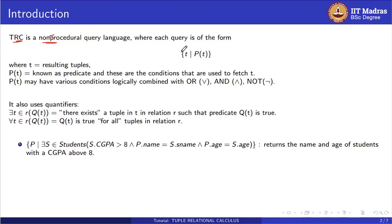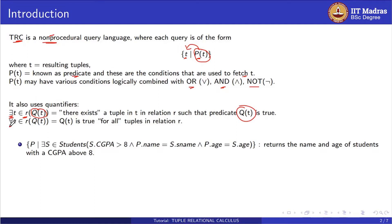The syntax of TRC is: inside the curly bracket there is tuple t and here is the predicate p. Based on this condition it will fetch the tuple t. P of t is known as the predicate — these are the conditions used to fetch t. The predicate may have various logical operators like OR, AND, and NOT, and also uses quantifiers like 'there exists' and 'for all'. There exists a tuple t belonging to relation r such that q of t is true. Similarly, for all tuples t belonging to relation r, q of t is true for all tuples in relation r.